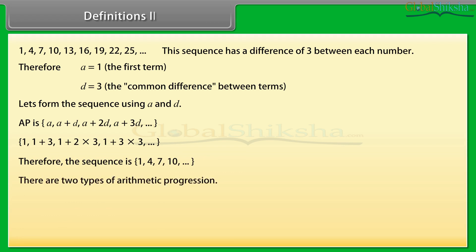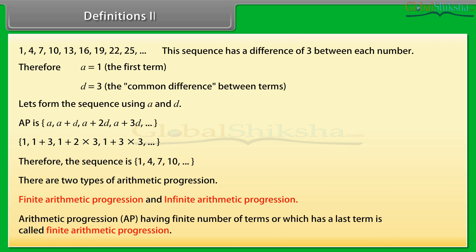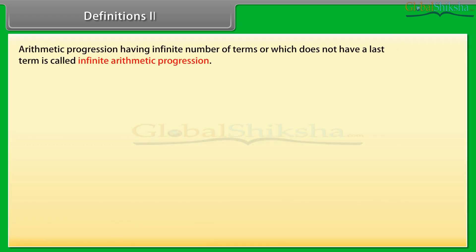There are two types of arithmetic progression: finite arithmetic progression and infinite arithmetic progression. An arithmetic progression having a finite number of terms, or which has a last term, is called a finite arithmetic progression. An arithmetic progression having an infinite number of terms, or which does not have a last term, is called an infinite arithmetic progression.